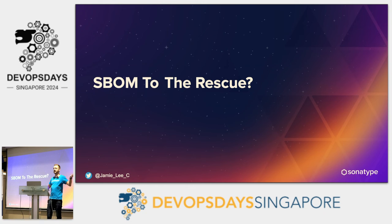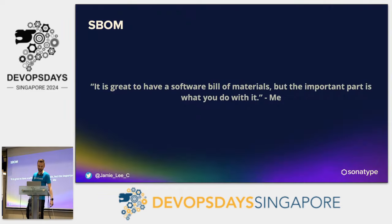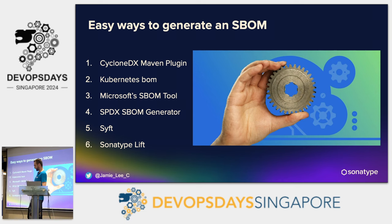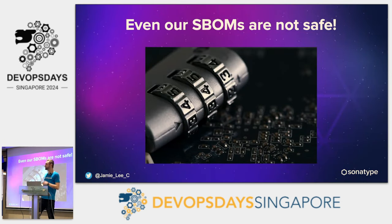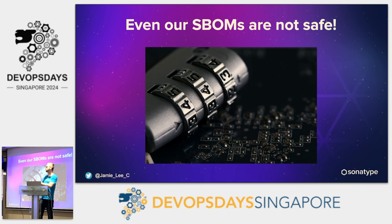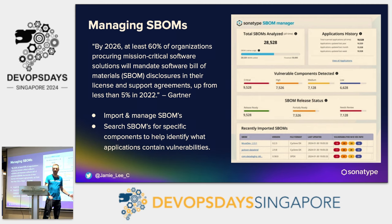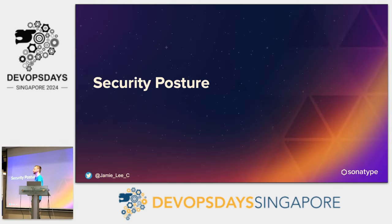SBOMs — Software Bill of Materials. A lot of people are starting to create them but not really doing much with them. There are lots of ways to generate SBOMs: you can use the Cyclone DX Maven plugin, Kubernetes has the ability, and build packs can create SBOMs too. My advice is to start creating SBOMs as soon as you can, because this gives you a timestamp of what's in your application at a certain point in time. But now people are even hacking SBOMs, so there's work on signing them to prevent tampering in transit. Sonatype just released SBOM Manager, which lets you import and manage your SBOMs. Start creating them and doing something with them — an SBOM is useless if you're not acting on it.